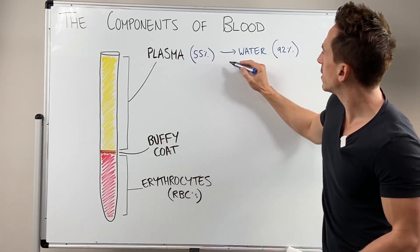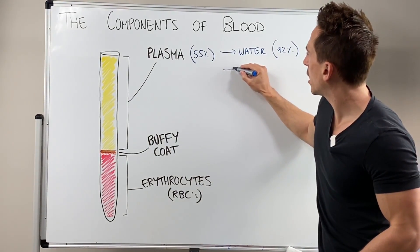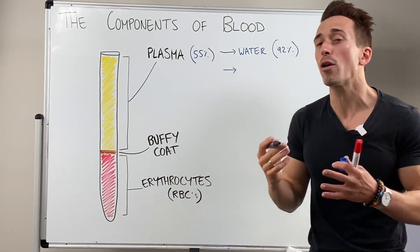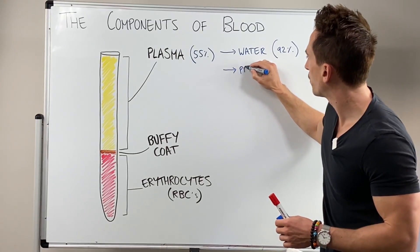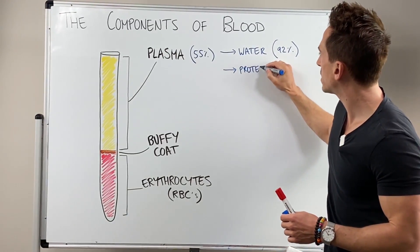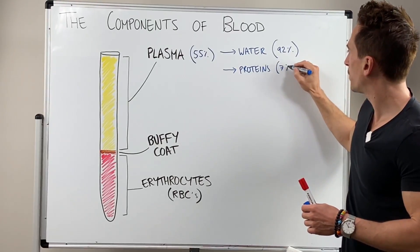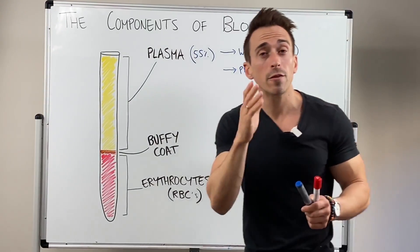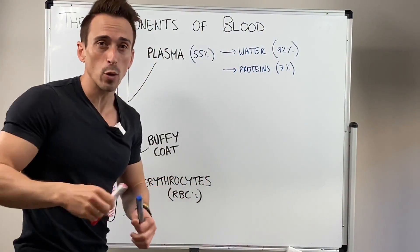All right, what else is in this blood plasma? Well we've also got other components like proteins, for example. Around about 7% of our plasma is proteins and there's a couple of different types of proteins that you probably should be aware of.